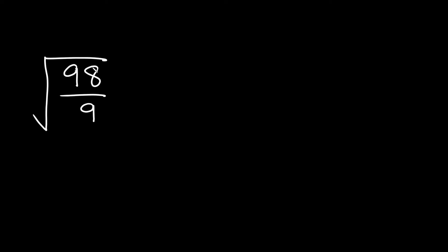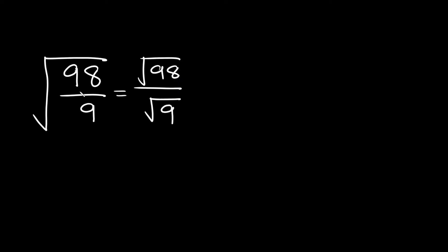Here we have the square root of 98 over 9, where the whole fraction is inside the radical. One thing we can do is split this up so we have the square root of 98 over the square root of 9 — both of these are equivalent. Now we can solve it the same way we did the last problem, starting with the top.